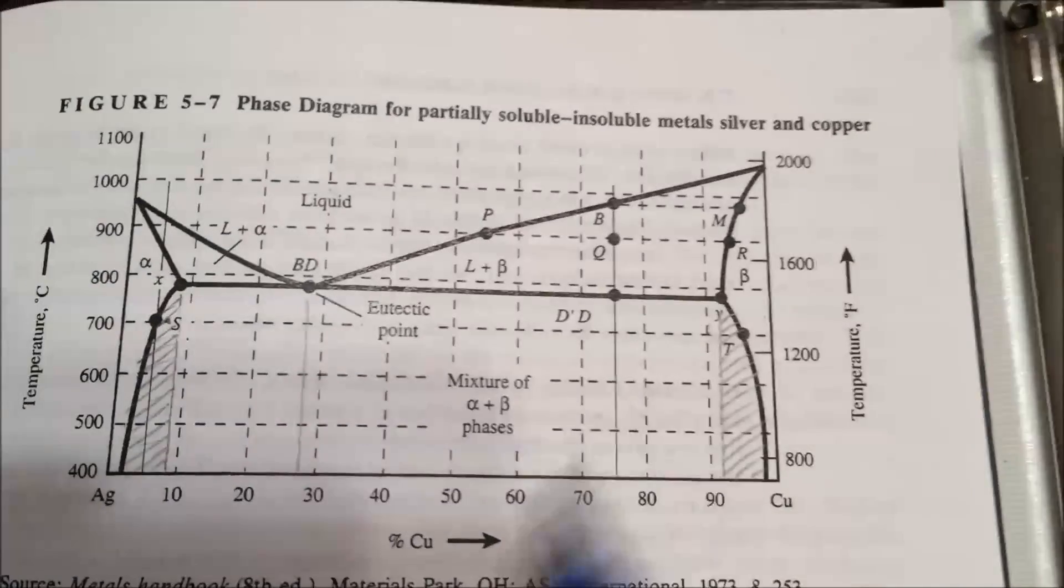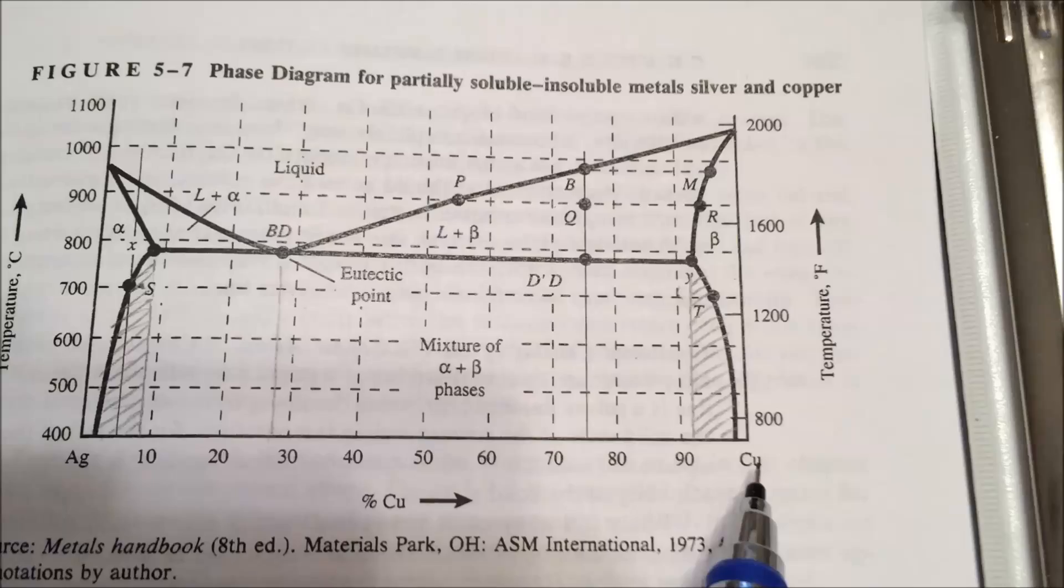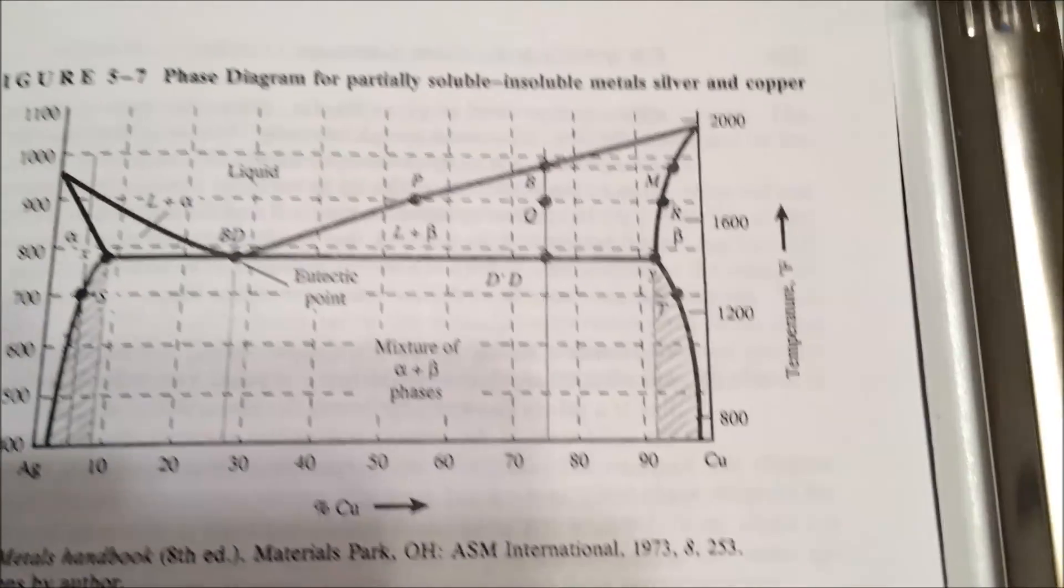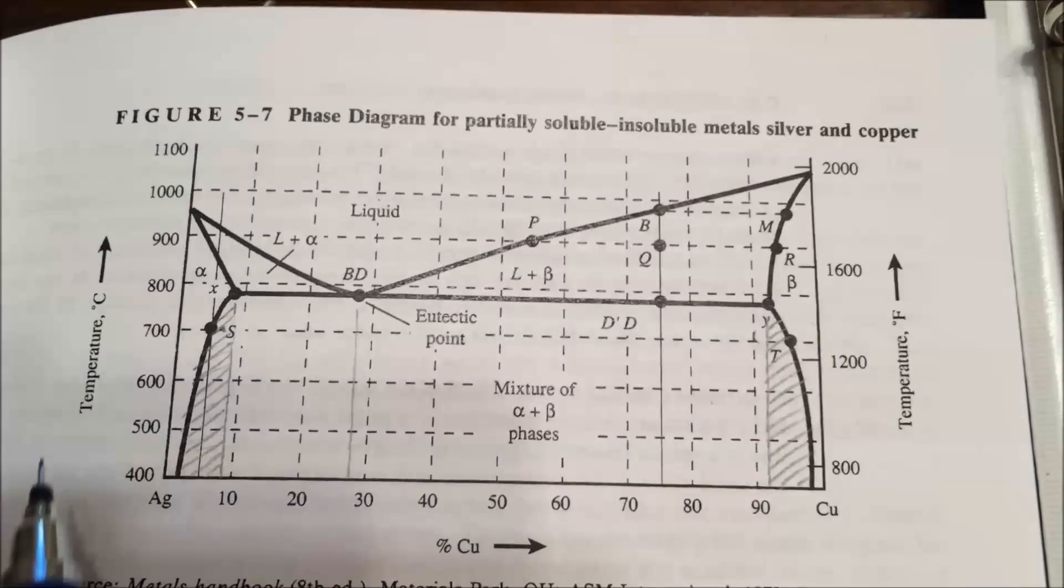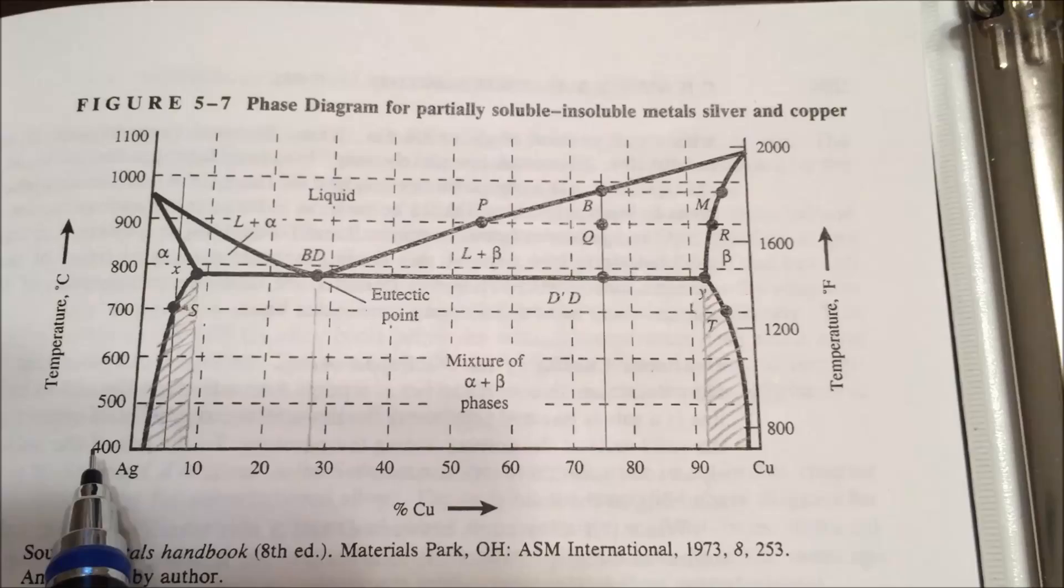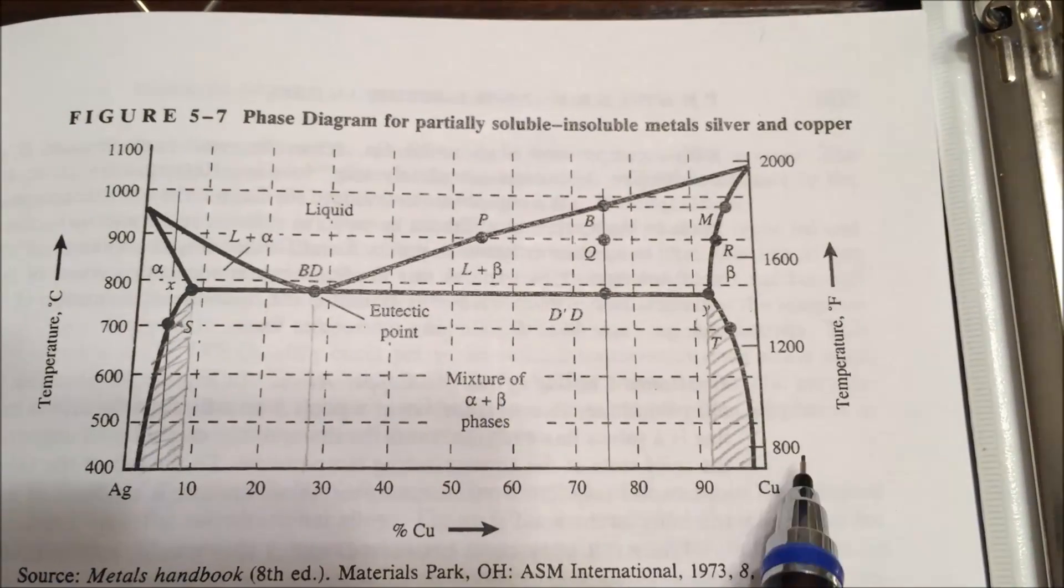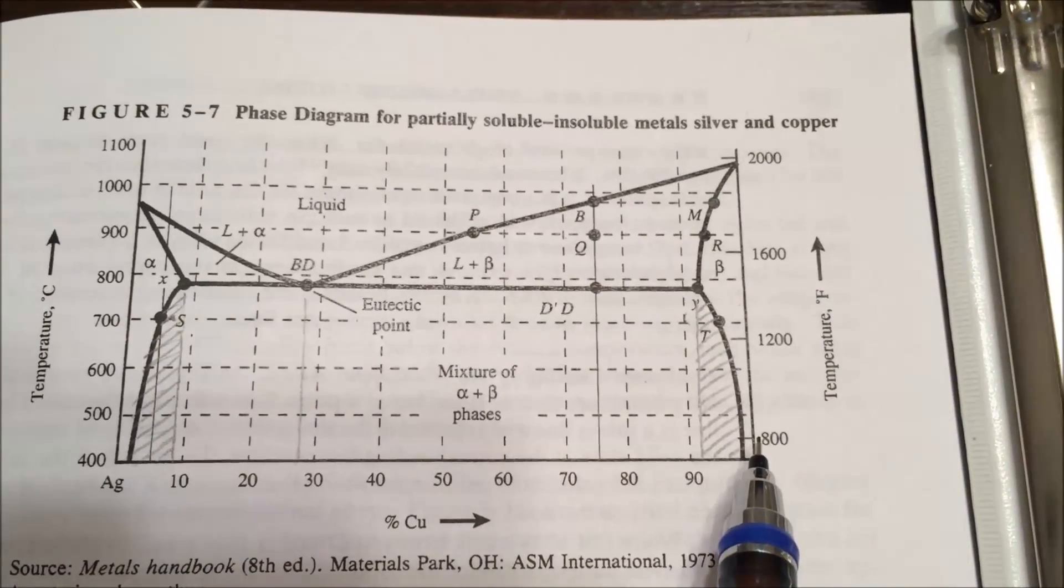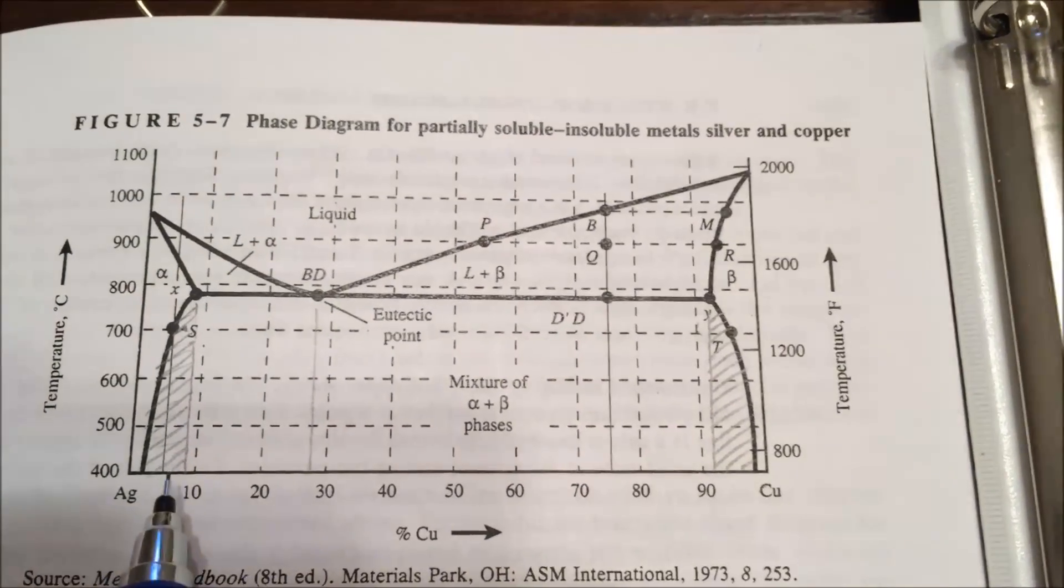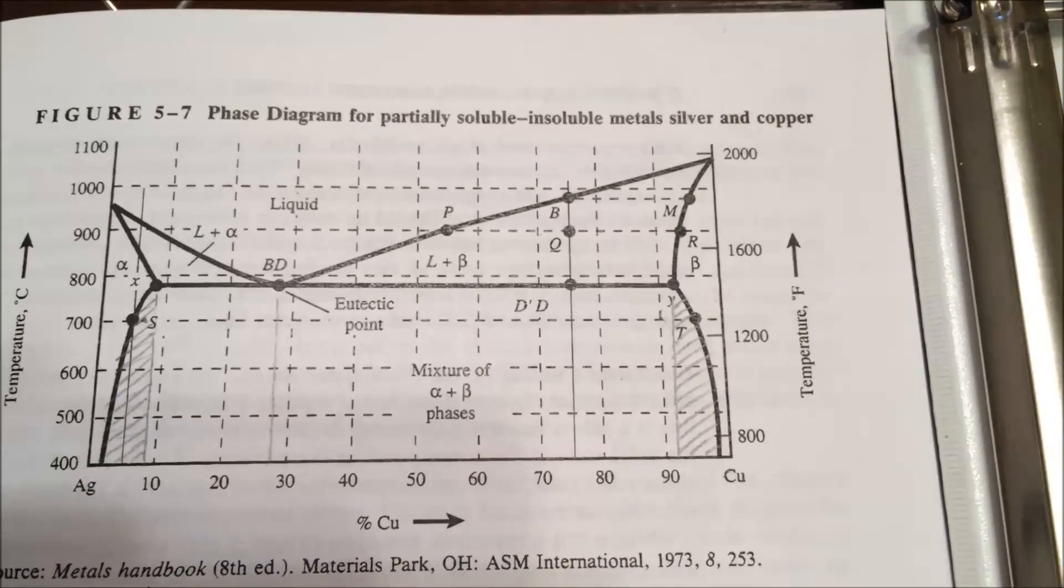This is a phase diagram of silver and copper. To give you the general idea of what you're looking at: you have a temperature scale in Celsius on the left y-axis, a temperature scale in Fahrenheit on the right y-axis, and a percent composition of copper on the x-axis from left to right.